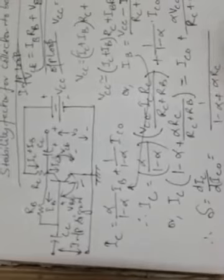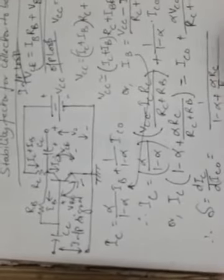Rearranging this equation, taking IC as common and moving terms to the left-hand side, we get: IC times (1 minus alpha plus alpha times RC divided by (RC plus RB)) equals ICO plus alpha times VCC divided by (RC plus RB). The stability factor is calculated by differentiating IC with respect to ICO, giving S equal to 1 divided by (1 minus alpha plus alpha times RC divided by (RC plus RB)).